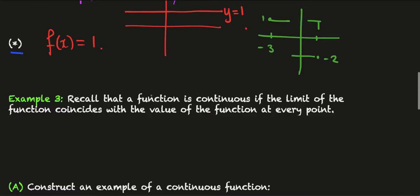Recall that a function, again will restrict to f from R to R, is continuous if the limit of the function coincides with the value of the function at every point. What does that mean? That means that if I look at the limit as x tends towards p where p is some point of f of x.